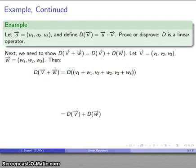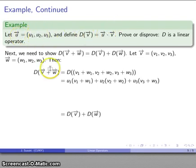My definition says if I apply D to a vector, it's the dot product of that vector with my predefined vector u⃗, so there's my dot product.